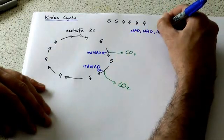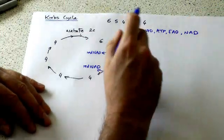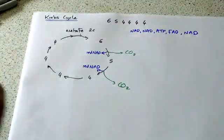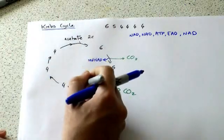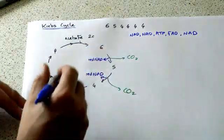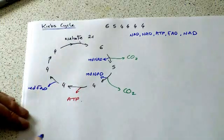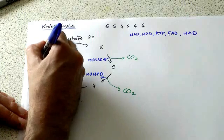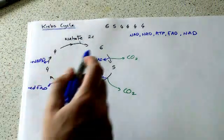NAD, NAD, ATP, FAD, NAD. If you can remember that, it makes life easy. NAD, NAD, ATP, FAD, NAD. And there we go, we've gone all the way around.